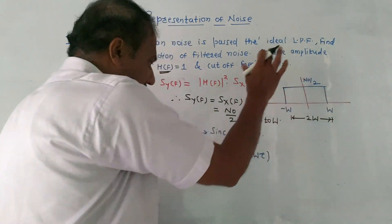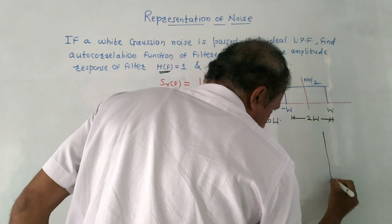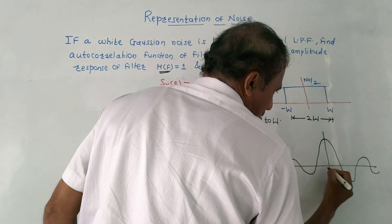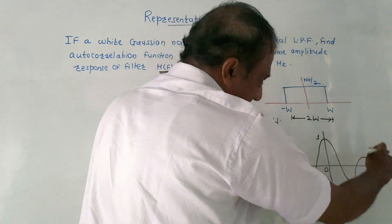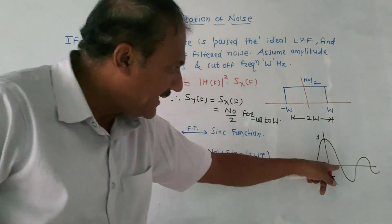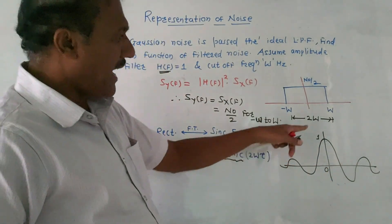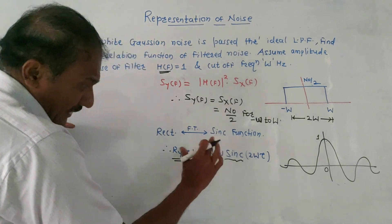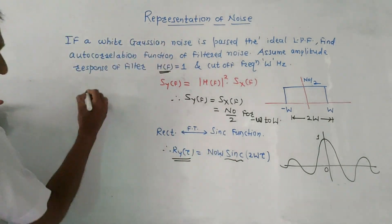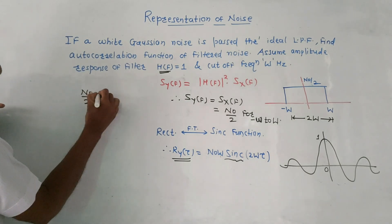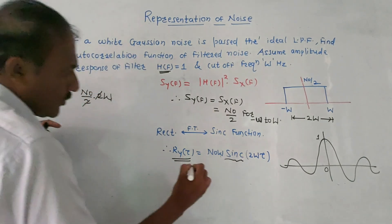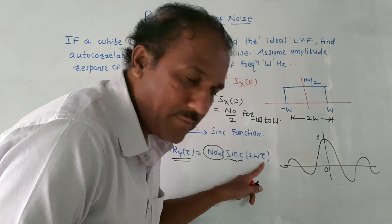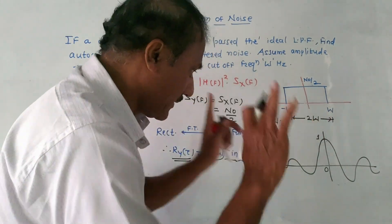If we have a rectangular signal, we know the standard formula - Fourier transform of rectangular pulse is the sinc function. Here rectangular signal's Fourier has to be calculated, so we will get the value of Ry(tau), where Ry(tau) is autocorrelation function. Using standard formula for calculation: rectangular signal's Fourier gives sinc function. In this case, amplitude is N0 by 2 into width 2W - 2 will cancel. So in this case amplitude is N0 into W, sinc of 2W tau. Tau is a dummy variable. 2W is the width.